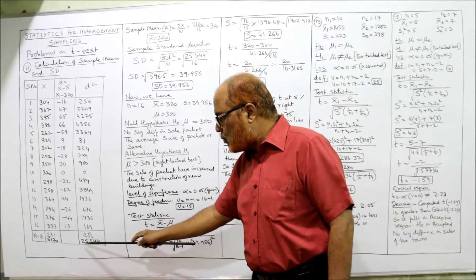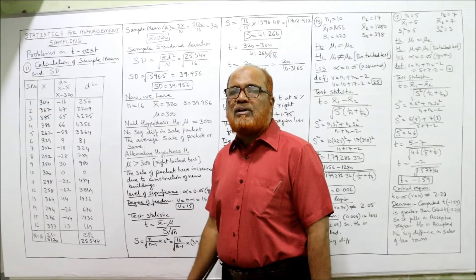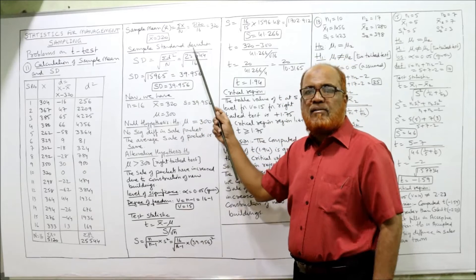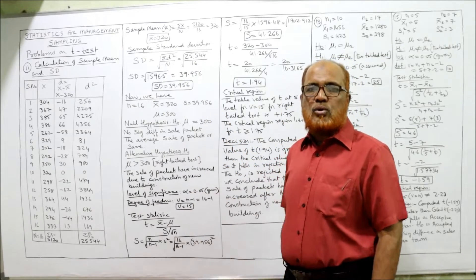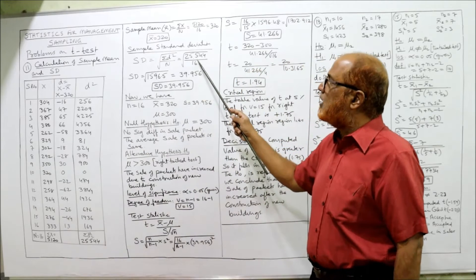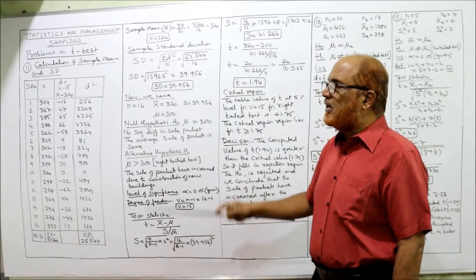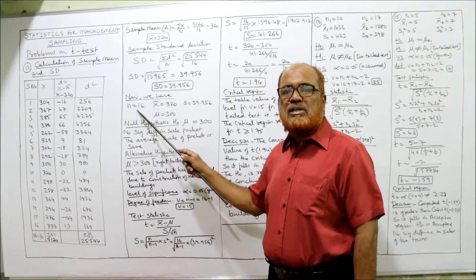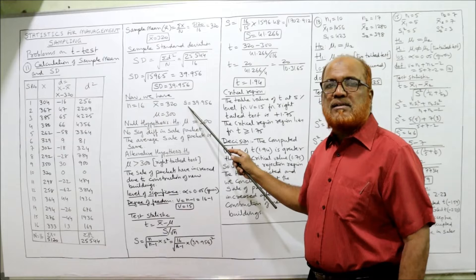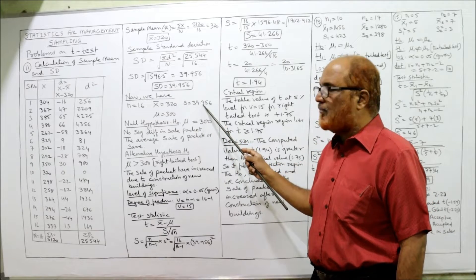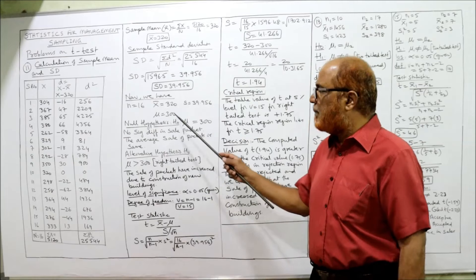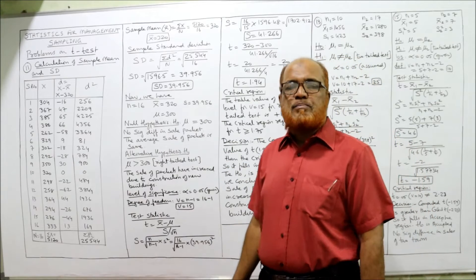The total of D-squared is 25,544 — that is summation D-squared, which we require for standard deviation. The formula for sample standard deviation is the square root of summation D-squared divided by N. So: square root of 25,544 divided by 16 gives standard deviation 39.956. Now we have N = 16, sample mean X-bar = 320, sample standard deviation s = 39.956, and population mean mu = 300 (the earlier normal sales figure).